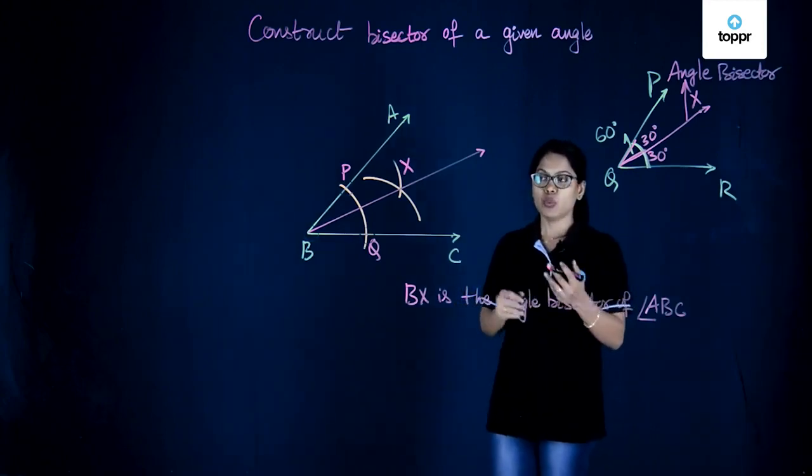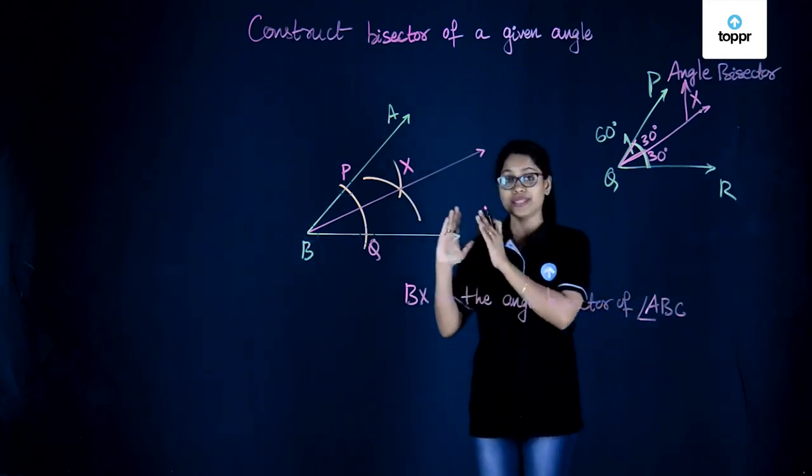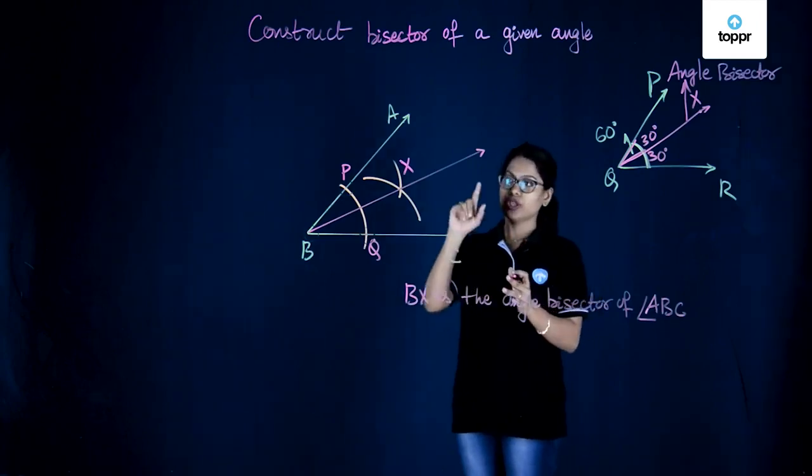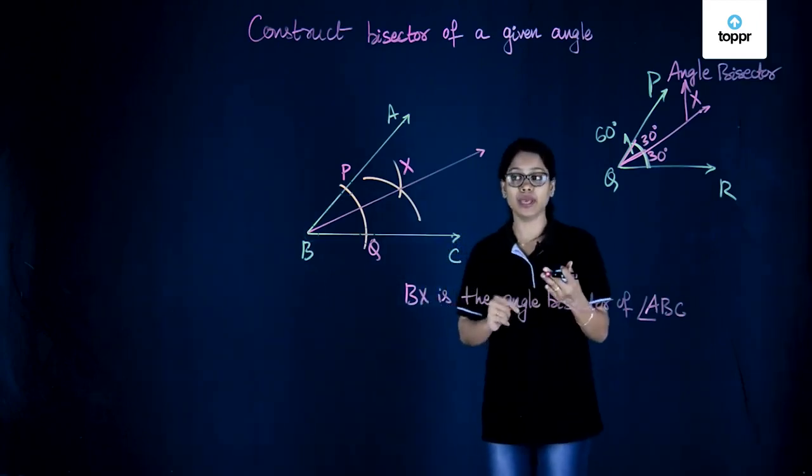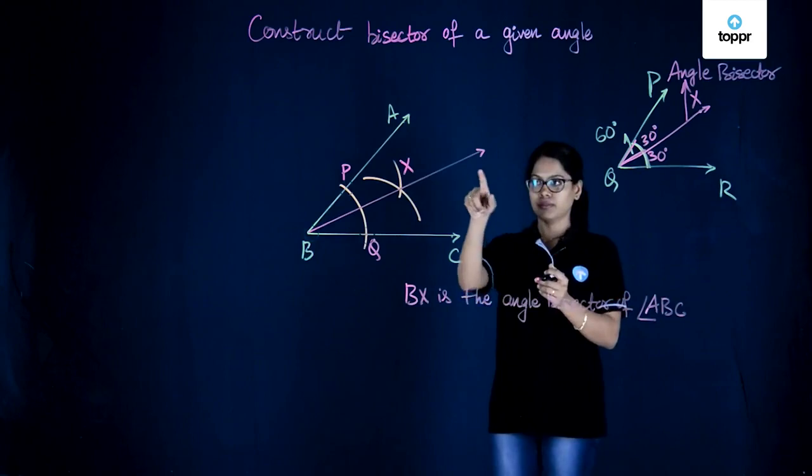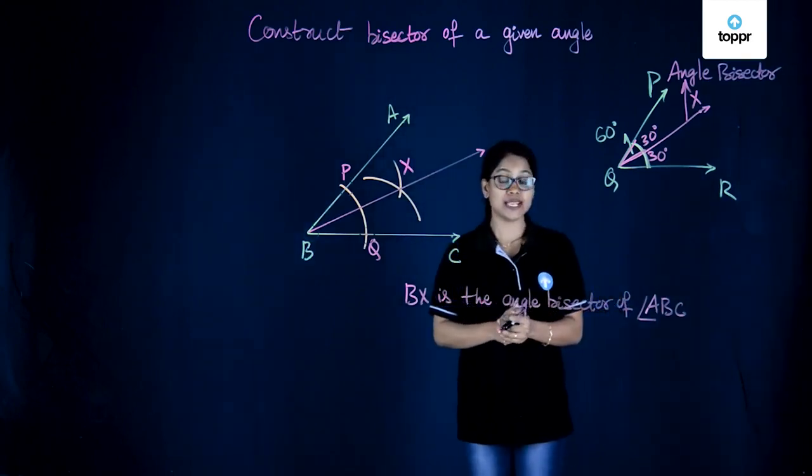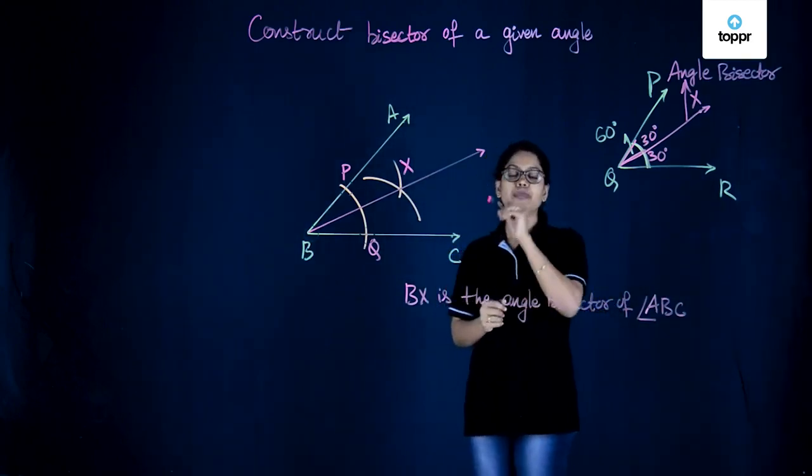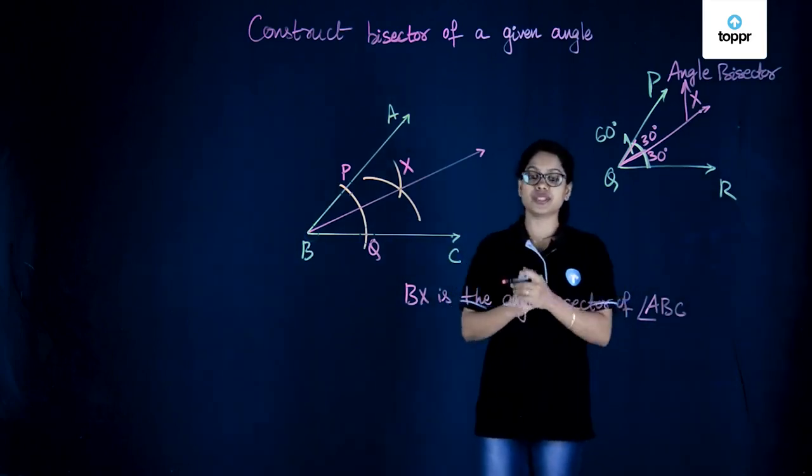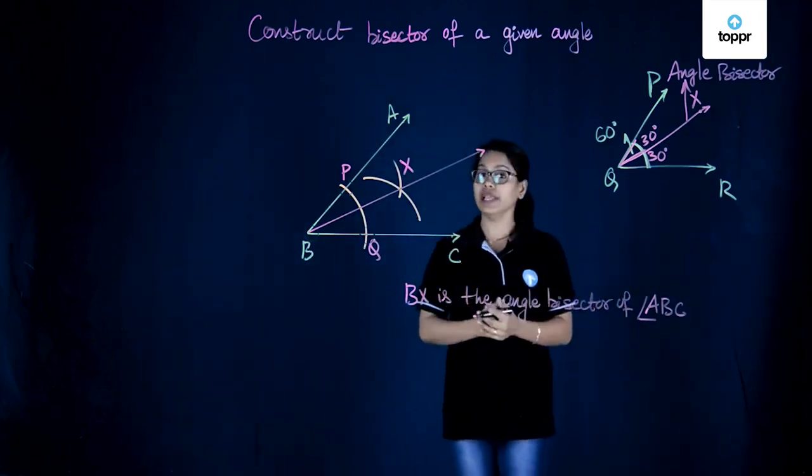In the next step, we cut two more arcs of the same measure as before with P as the center and then again with Q as the center. And we named the point of intersection of the arcs as X and then we joined BX. So BX here is the angle bisector of angle ABC.